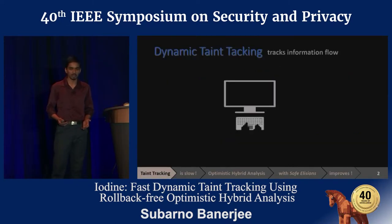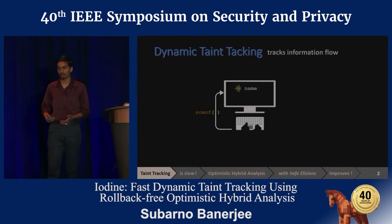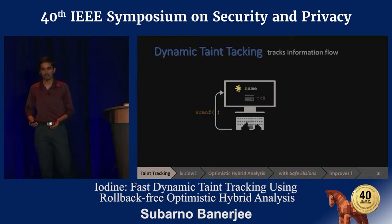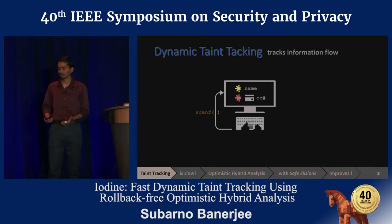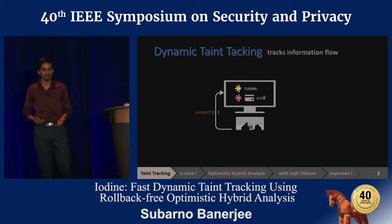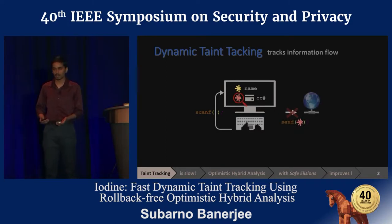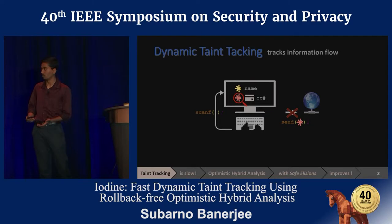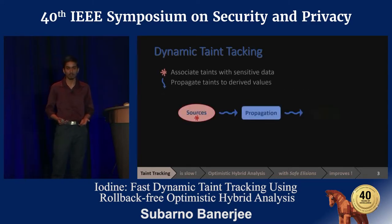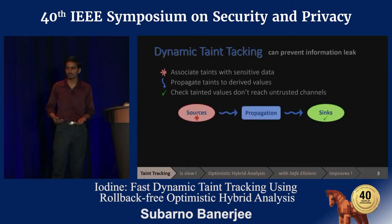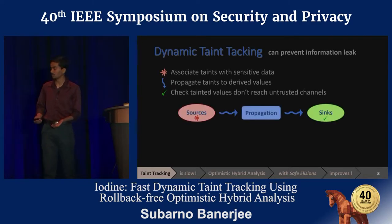Taint tracking is a solution that detects and defends against information leaks by monitoring dynamic executions. It taints sensitive user data, tracks taints throughout execution, and then prevents taints from flowing into untrusted channels. Taint tracking has three components: sources, propagation, and sinks.